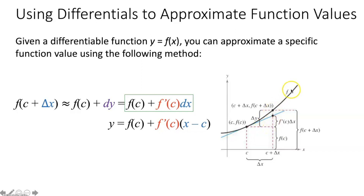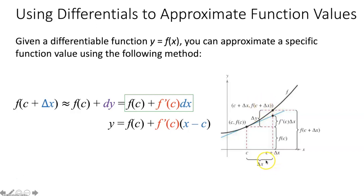In terms of the figure, we're approximating the y value of the function at x = c + delta x by finding the y value of the tangent line to the function at x = c, evaluated at c + delta x. f(c) is the y value of your function and tangent line at x = c. To get to the new y value, add dy = f′(c)dx, which is the change in y along the tangent line. As delta x approaches 0, these two y values get closer and closer together, making the approximation more exact.